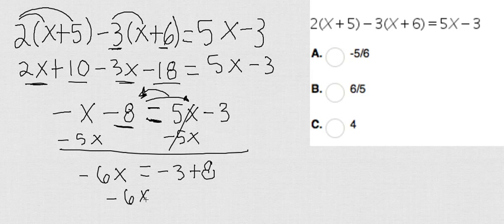Finally negative 6x equals negative 3 plus 8 which is 5 and I just divide by negative 6 on both sides and my final answer is negative 5 over 6.